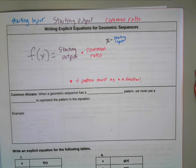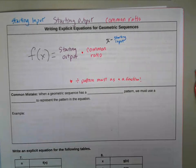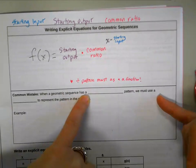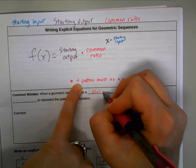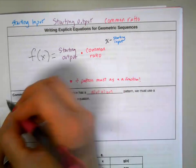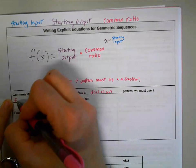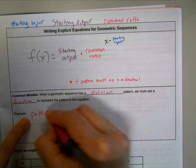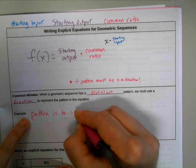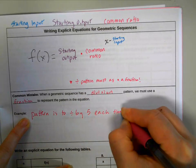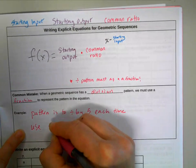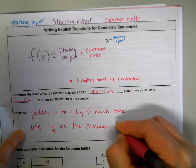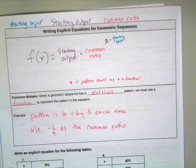And all of that is in our exponent. So there we have it. This is the format that we're going to use for writing explicit equations for geometric sequences. And look here, common mistake. When a geometric sequence has a division pattern, we must use a fraction to represent the pattern in the equation. That's what I was just saying. So if the pattern is to divide by five each time, use times one-fifth as the common ratio.